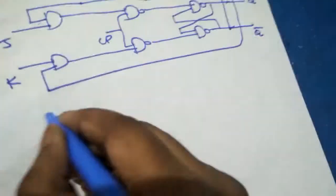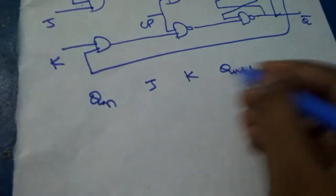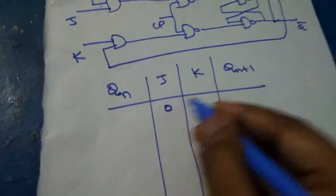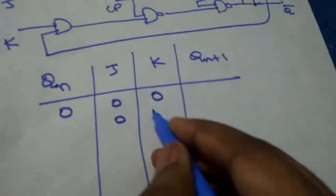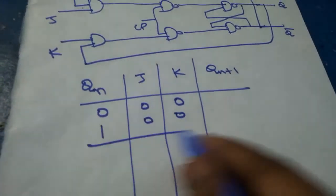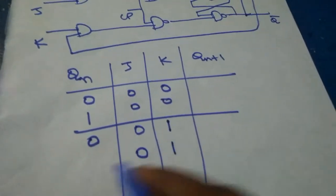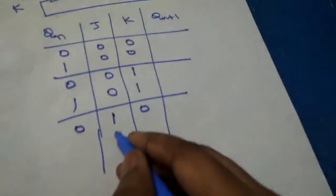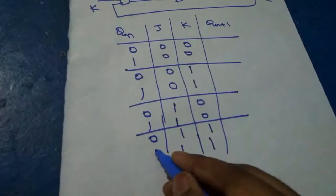The truth table of the JK flip-flop has columns: Q_N, J, K, and Q_N+1. For J=0, K=0 at present state 0; J=0, K=0 at present state 1; J=0, K=1 at present state 0; J=0, K=1 at present state 1; J=1, K=0 at present state 0; J=1, K=0 at present state 1; J=1, K=1 at present state 0; and J=1, K=1 at present state 1.